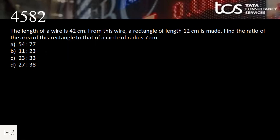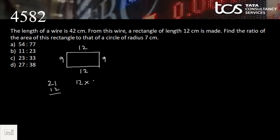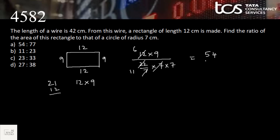A wire of length 42 cm is bent into a rectangle of length 12 cm. Perimeter = 42, so half-perimeter = 21; breadth = 21 − 12 = 9 cm. Area of rectangle = 12 × 9 = 108. A circle of radius 7 has area = (22/7) × 49 = 154. Ratio of rectangle area to circle area = 108 : 154, which simplifies to 54 : 77. Option A.